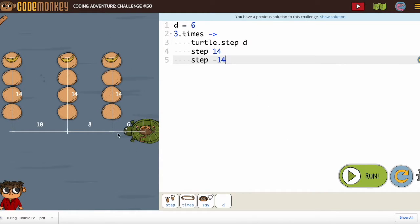Now the next time the turtle needs to step 8. So we're going to change the value of D. D equals D plus 2. 6 plus 2 is 8. 8 plus 2 is 10.